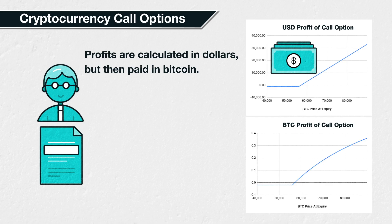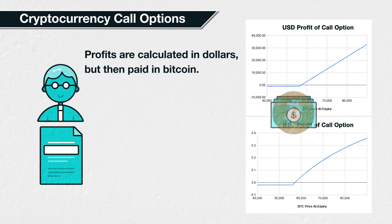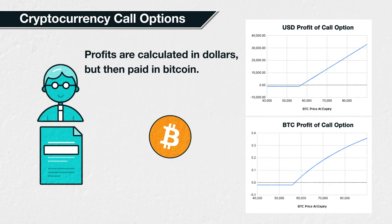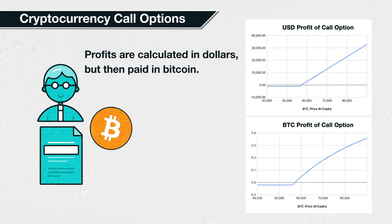This means that after calculating how many dollars the call option is worth at expiry, this amount must then be converted into the cryptocurrency. The premium paid for the option is also set in cryptocurrency, so when calculating the profit we need to subtract the amount of cryptocurrency paid for the option from the amount of cryptocurrency received. For this lecture we will be using Bitcoin specifically, but this applies equally to Ethereum contracts or any other contract that uses the asset itself as collateral.